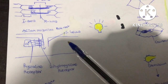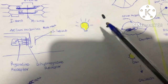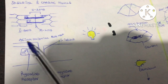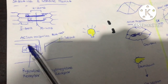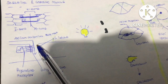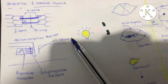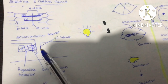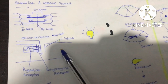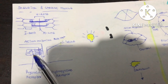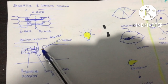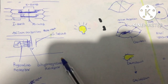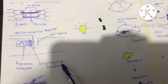Before contraction there must be an action potential. The action potential travels on the surface of the muscle membrane — the sarcolemma — until it reaches the T-tubule (transverse tubule). The T-tubule directs the action potential inside the muscle, specifically to the endoplasmic reticulum. The T-tubule has a receptor sensitive to the action potential called the dihydropyridine (DHP) receptor.